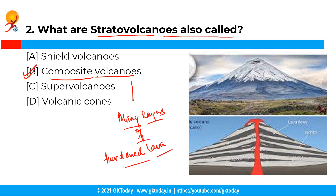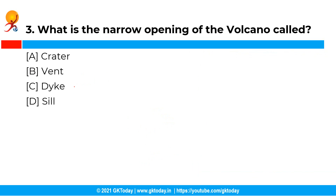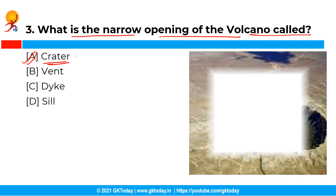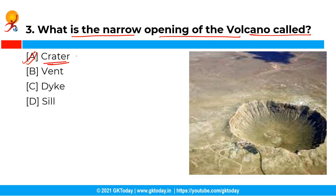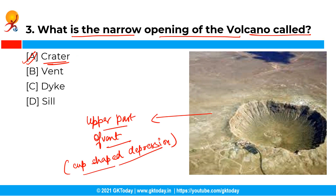The next question is: what is the narrow opening of the volcano called? The correct answer is option A — crater. The narrow opening of the volcano is called the crater. It is the upper part of the vent, which is a cup-shaped depression.